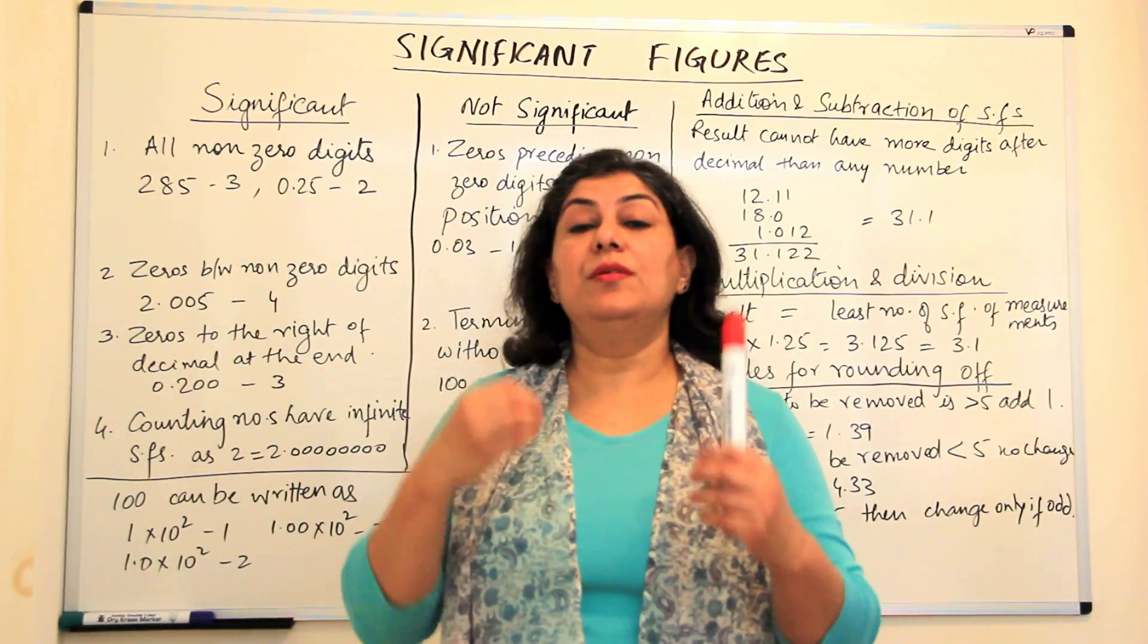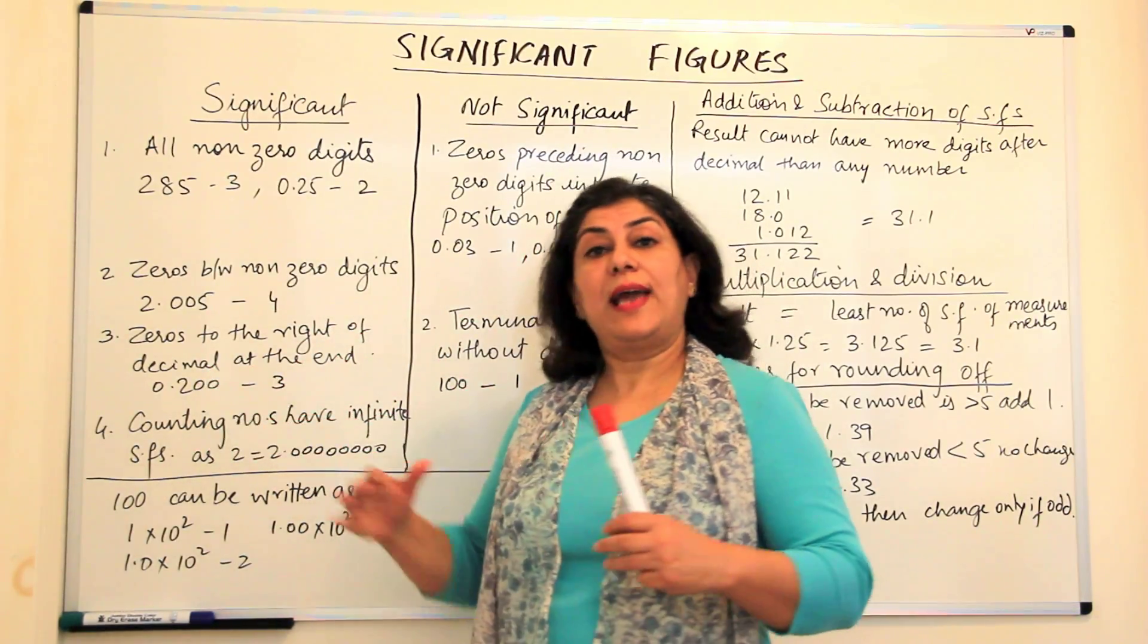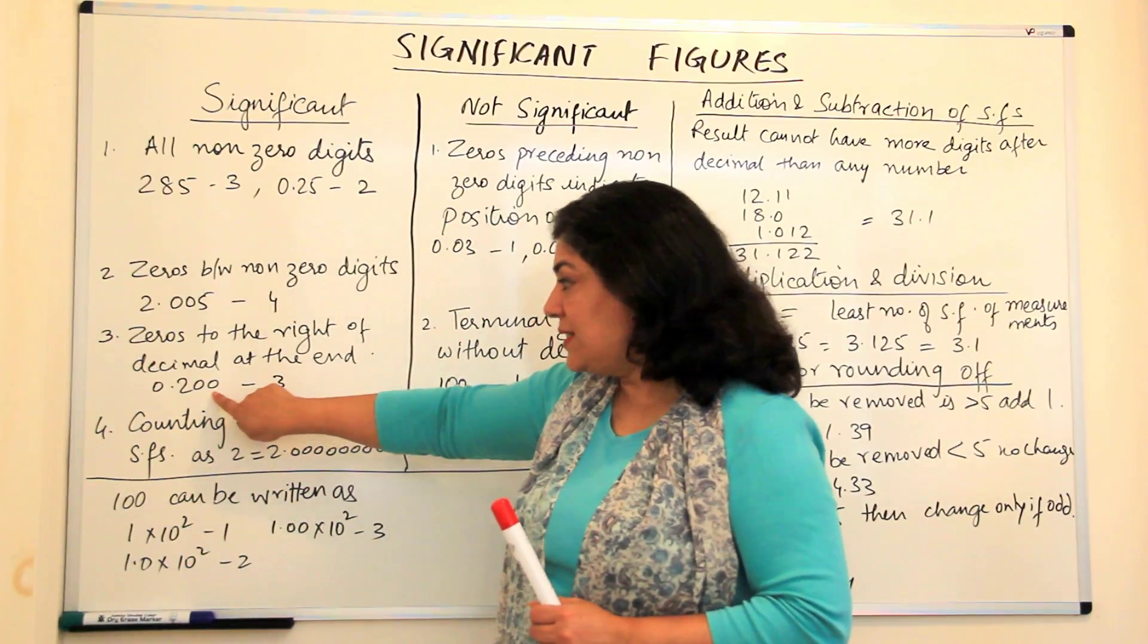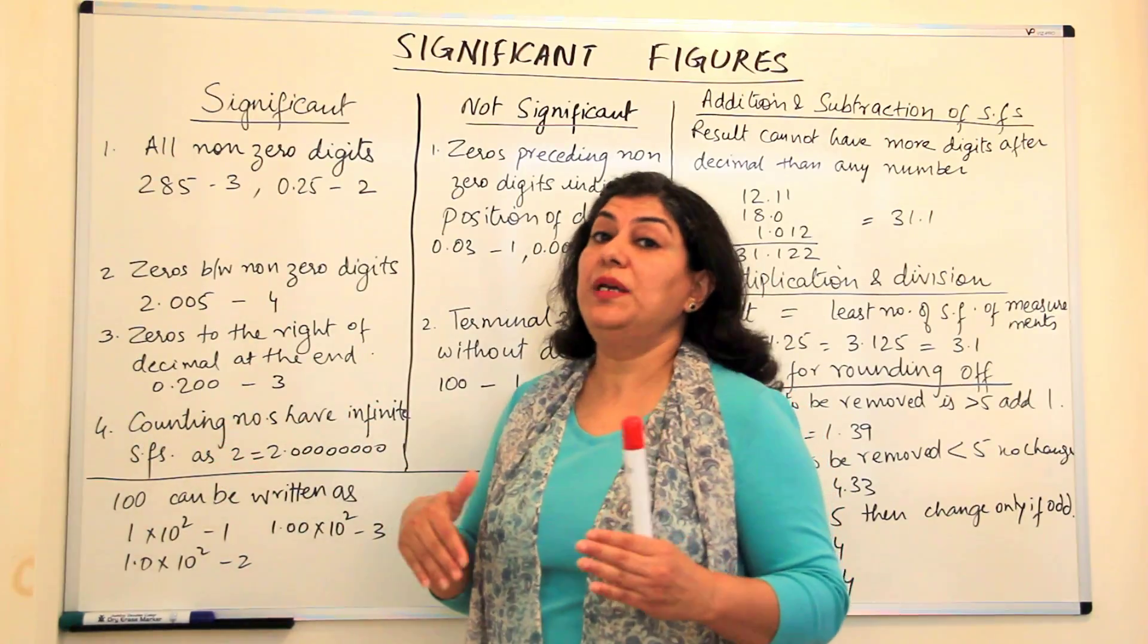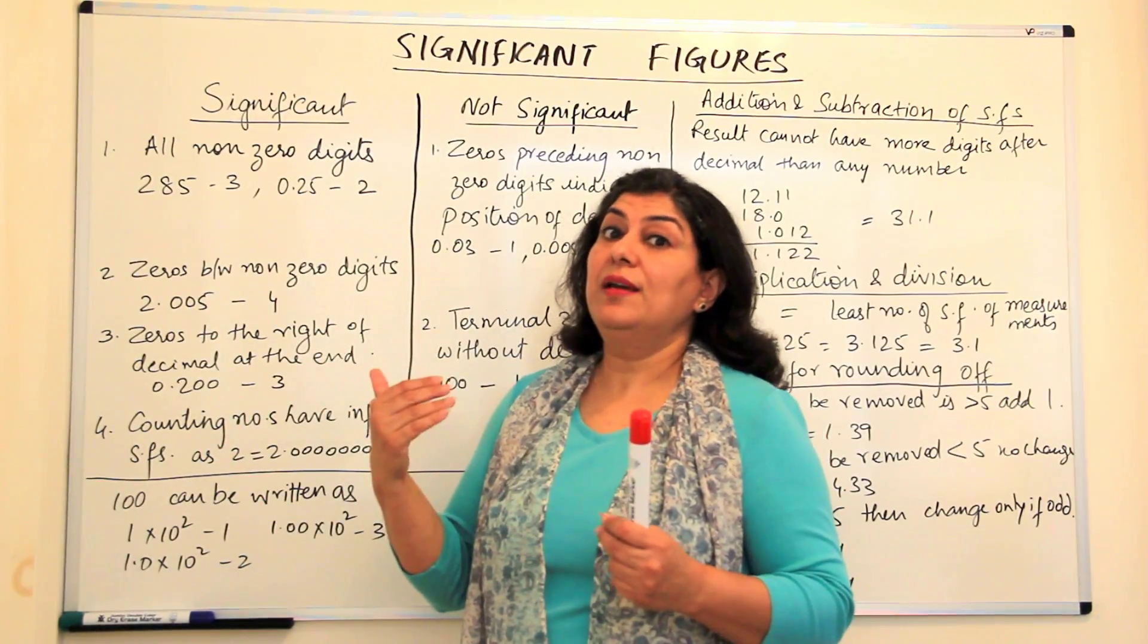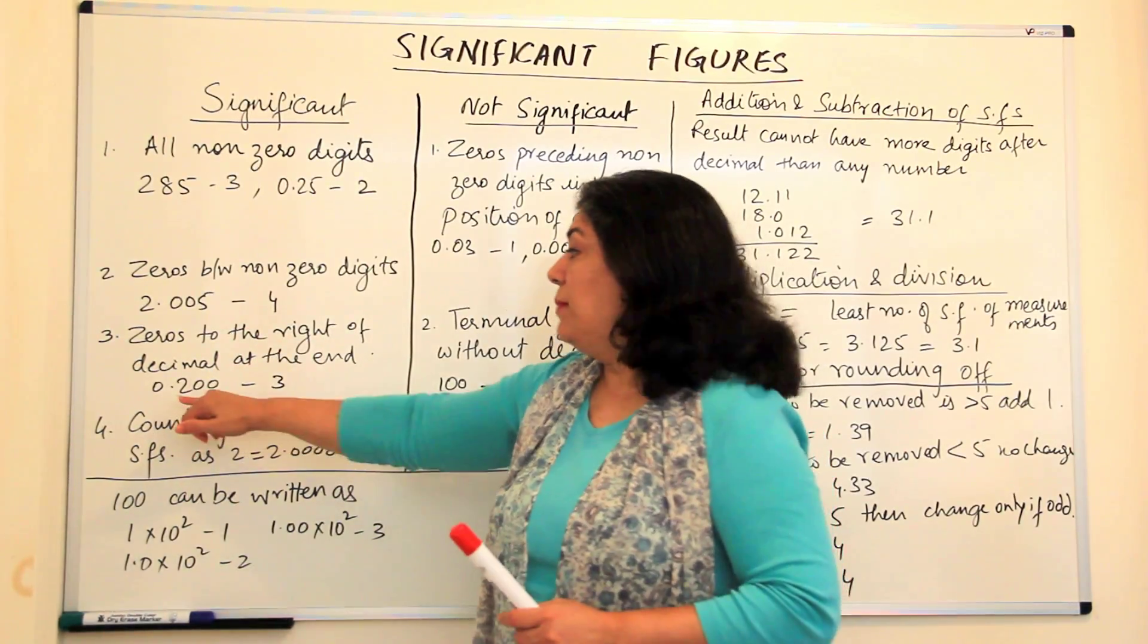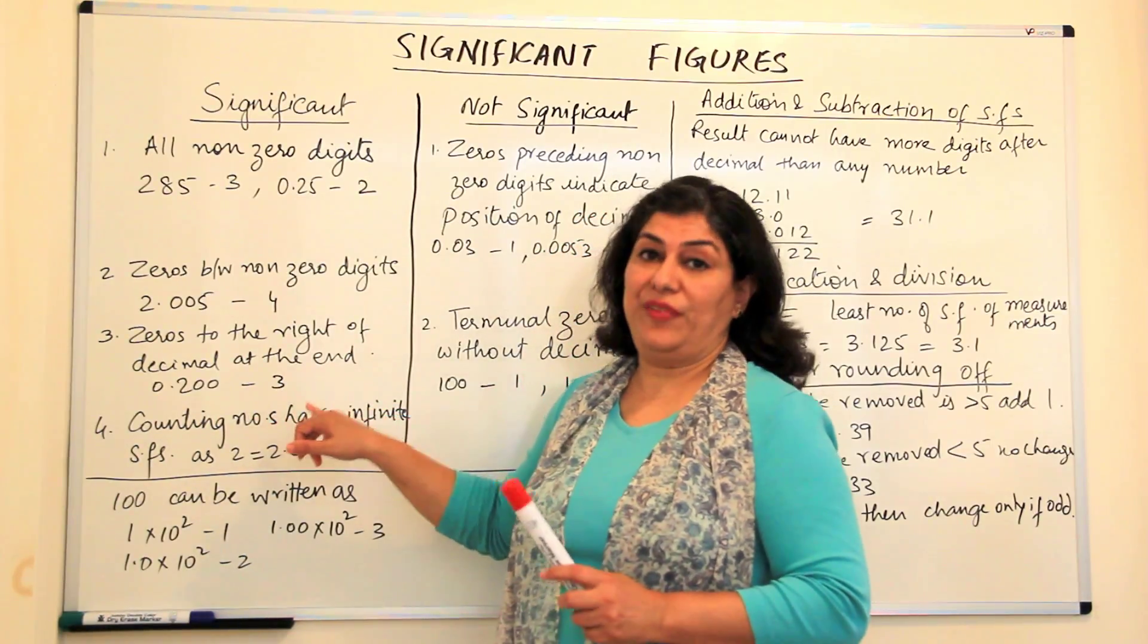I'm writing the reading to the third place of decimal. It means I actually have measured up to that place of decimal. I might have an error in the last digit. This might be 0, this might be 1 or it may be 9.